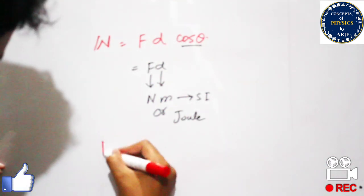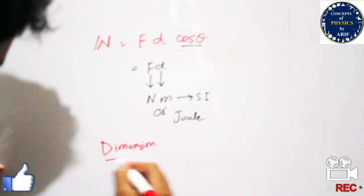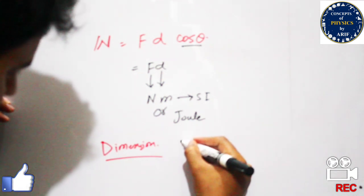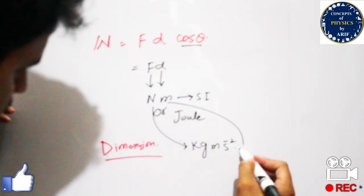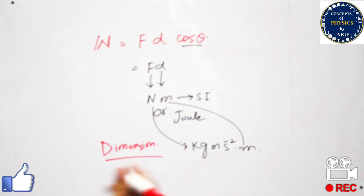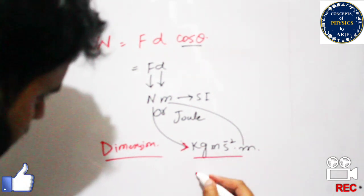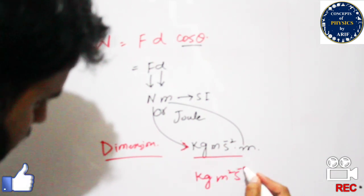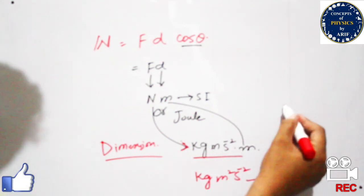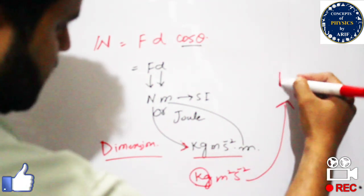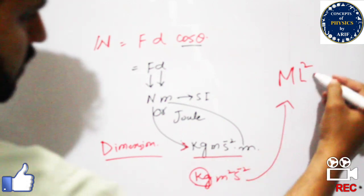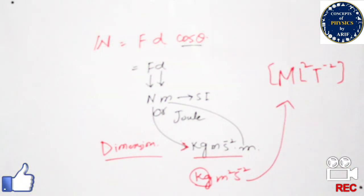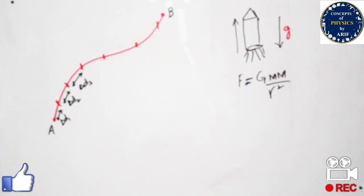In case of dimension, we need to expand newton: newton is kilogram meter per second squared, and multiplied by one meter. Combining these terms we get kilogram meter squared per second squared. Converting to dimensions: kilogram is mass M, meter squared is L², and second squared is T⁻². So the dimension of work is ML²T⁻², which is also the dimension of energy.